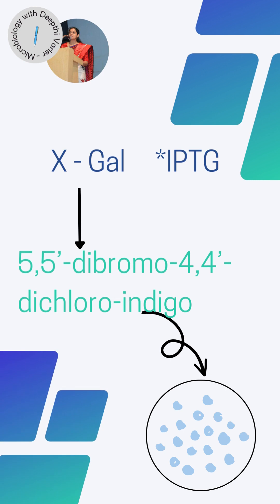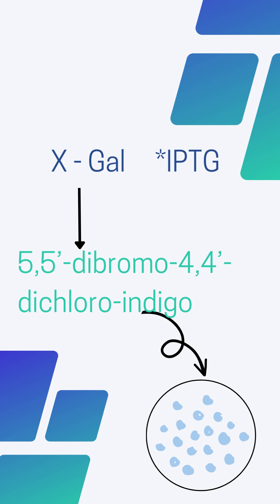How is this helpful to us? When such cells are grown in a medium containing X-gal and IPTG, we get different colored colonies. X-gal is the chromogenic substrate — chromogenic because it gets converted into a colored compound when hydrolyzed. X-gal stands for 5-bromo-4-chloro-3-indolyl-beta-D-galactopyranoside. IPTG is the inducer for the lacZ gene, and it stands for isopropyl-beta-D-1-thiogalactopyranoside, an analog of galactose that induces expression of the lacZ gene.